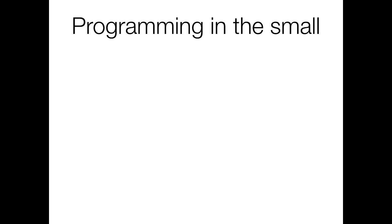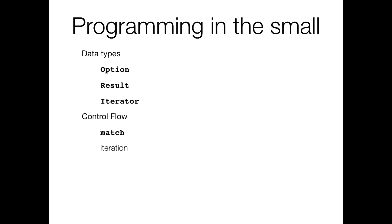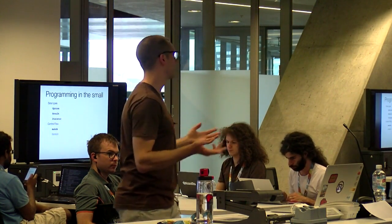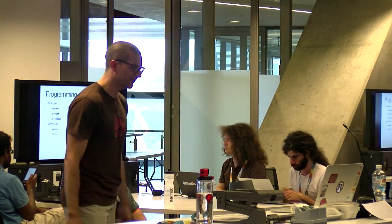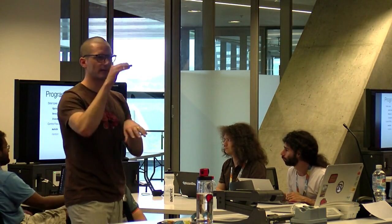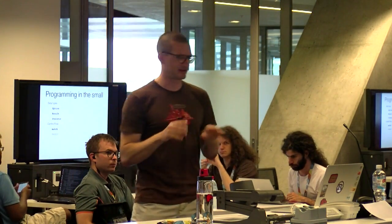Let's start programming in the small. The data types we're going to talk about are Option, Result, and Iterator. In any given Rust program, maybe 50% of the types you ever use are these three types — they're really fundamental to Rust. In terms of control flow, we're going to touch on the match statement, which is a pattern matching construct, and iteration in general. We're going to zigzag between data types and control flow.